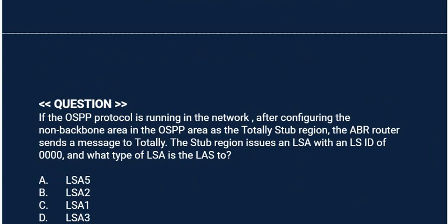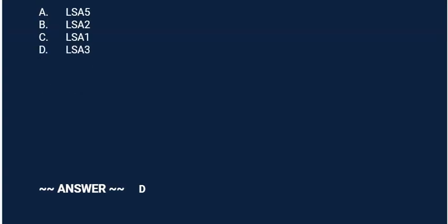Next question: If the OSPF protocol is running in the network, after configuring the non-backbone area in the OSPF area as a totally stub region, the ABR router sends a message to the totally stub region — an LSA with an LSID of 0.0.0.0. What type of LSA is it? Option A: LSA 5. Option B: LSA 2. Option C: LSA 1. Option D: LSA 3. Correct answer is Option D.